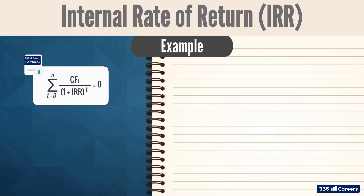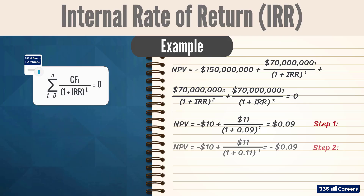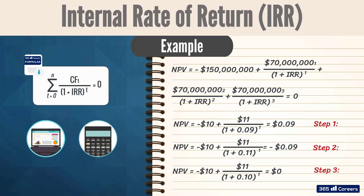By substituting the parameters, we obtain the equation where the only unknown is IRR. In our previous example we used a trial-and-error method, guessing the IRR through several iterations. Obviously, this is a time-consuming and ineffective process, especially when the number of cash flows increases. In reality, analysts use spreadsheet software or financial calculators, which makes it much easier.